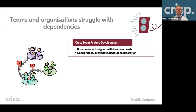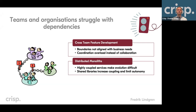You get a lot of coordination overload meetings instead of collaborating on getting good software out. Another very common dependency challenge is in organizations that adopt microservices as their main architectural style but are not doing it quite cleanly. They end up with what's sometimes called a distributed monolith — services that are highly coupled, making evolution difficult. You can also get similar problems from shared libraries increasing coupling, making teams that should be autonomous not really autonomous anyway.